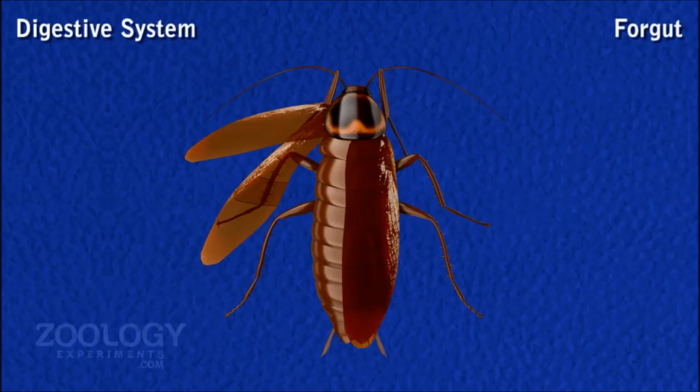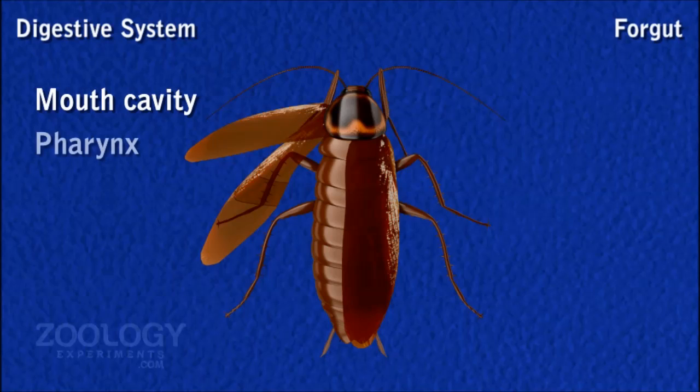Foregut. It includes mouth cavity, pharynx, esophagus, crop, and gizzard.